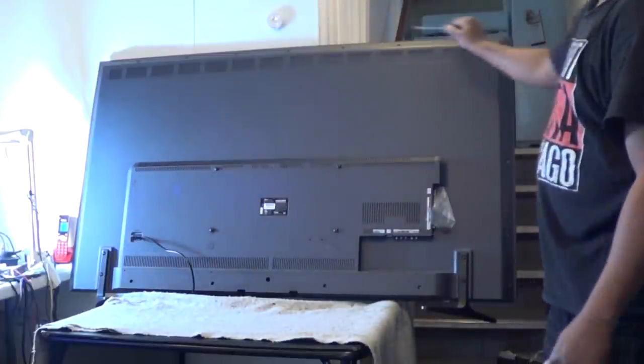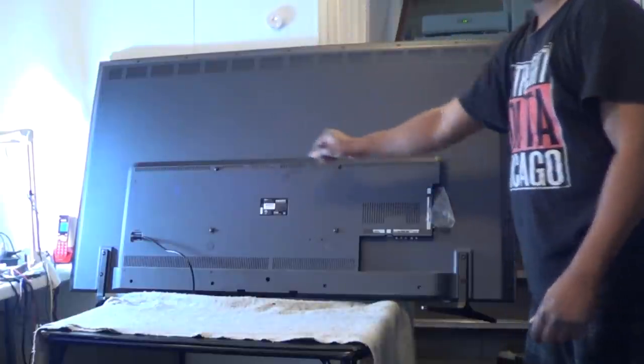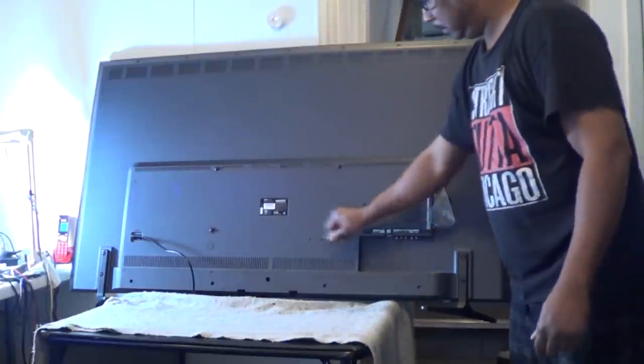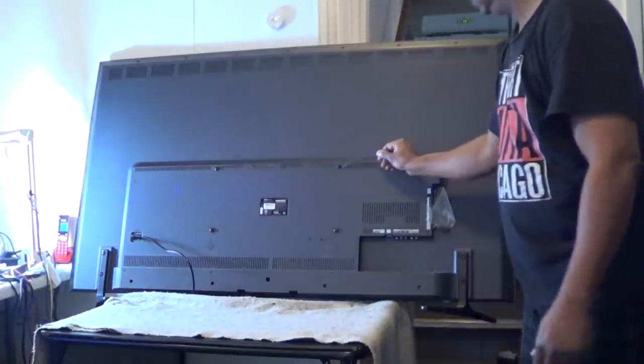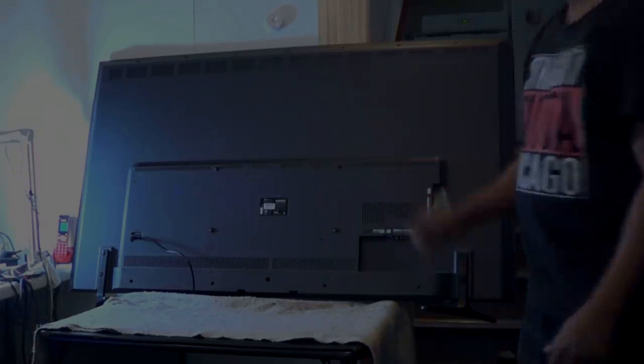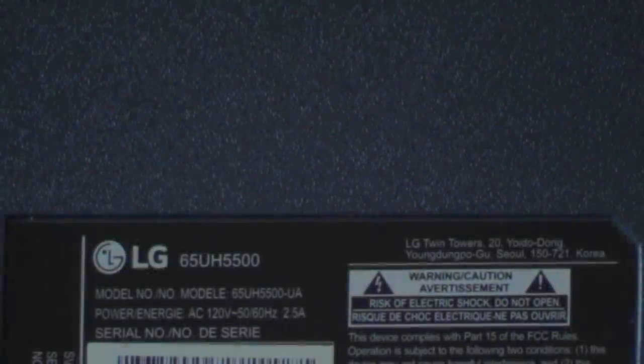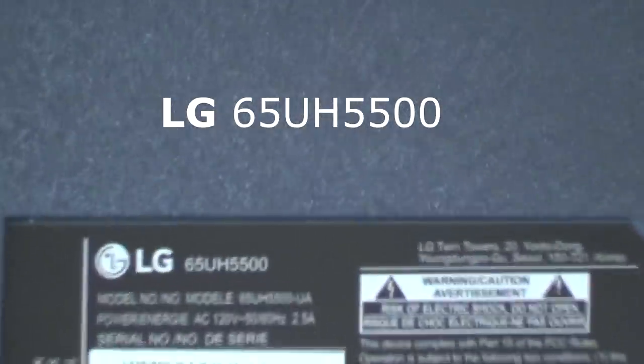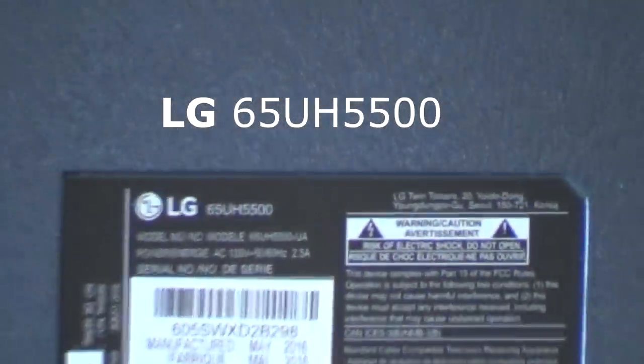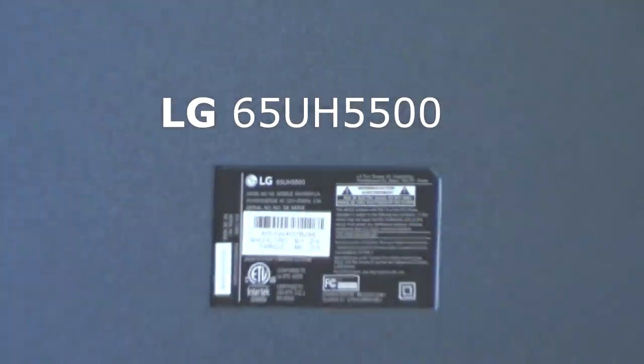So we'll proceed to take this TV apart here, disassemble it. Just pretty much self-explanatory, remove all of these screws on the outside and the screws in the middle. Those are for your wall mounts, pretty easy. To verify this model number, this is an LG 65UH5500, 65-inch LED TV.